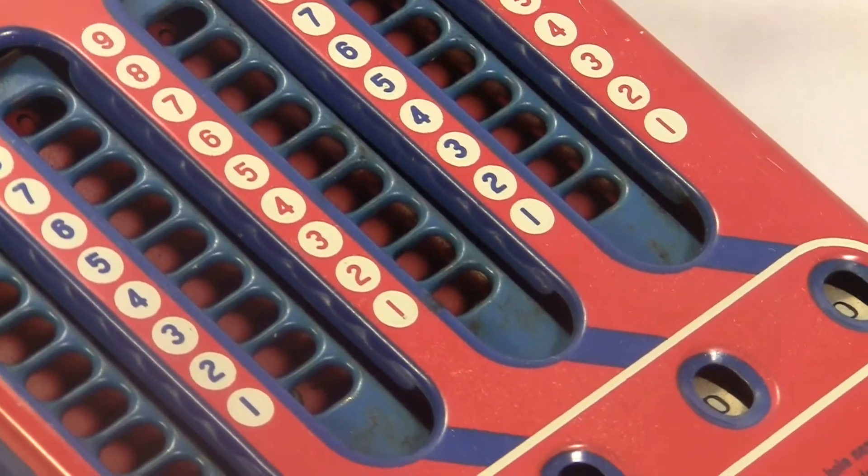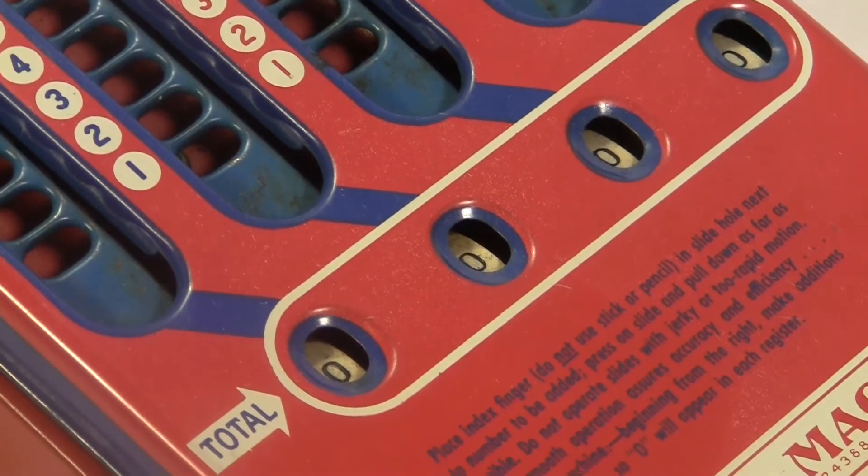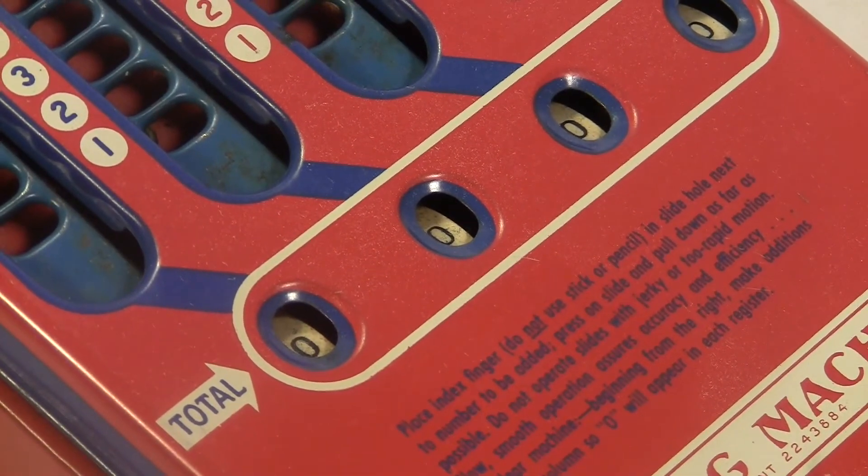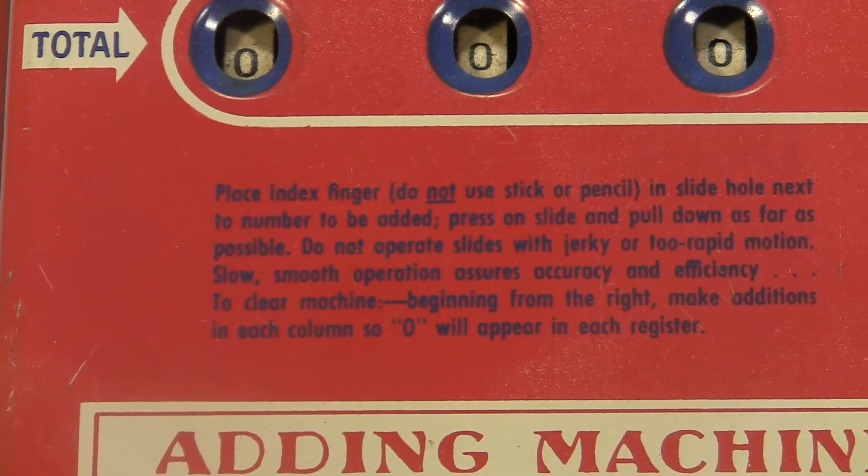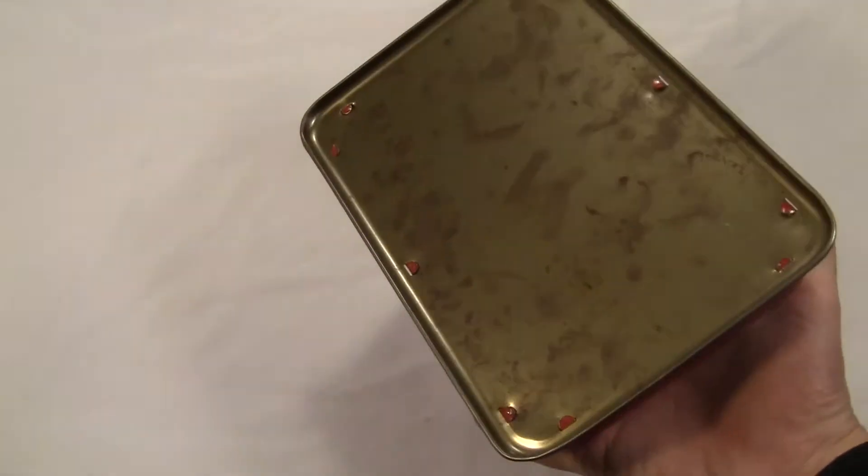Each column has a strip with little finger holes that you pull down. Down here where it says total, you can see the total. We got instructions right here on the front. And that's about it.